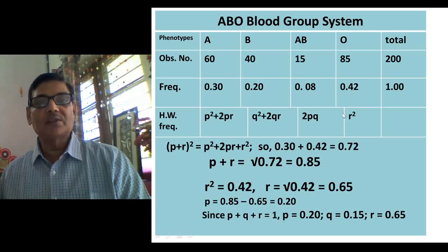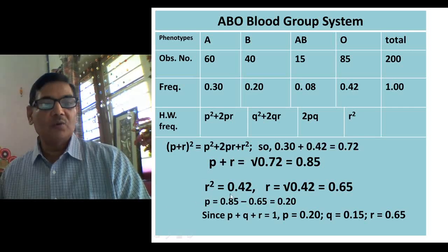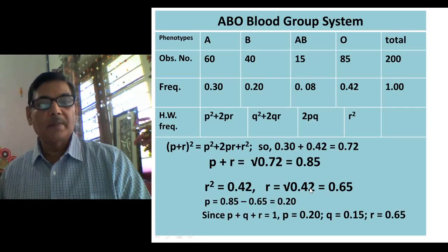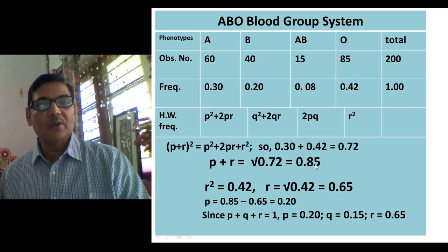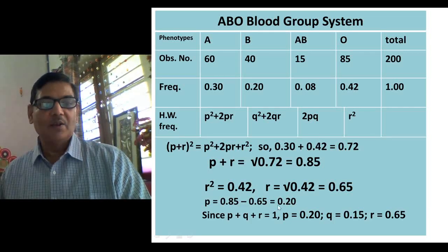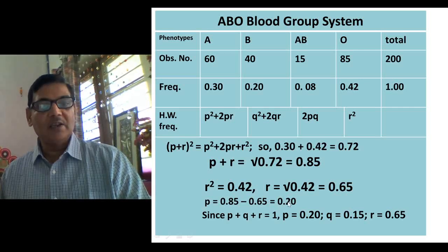Now that we have P + R = 0.85 and R = 0.65, we can find P. P = 0.85 − 0.65 = 0.20. So the value of P, which represents the frequency of IA, is 0.20.